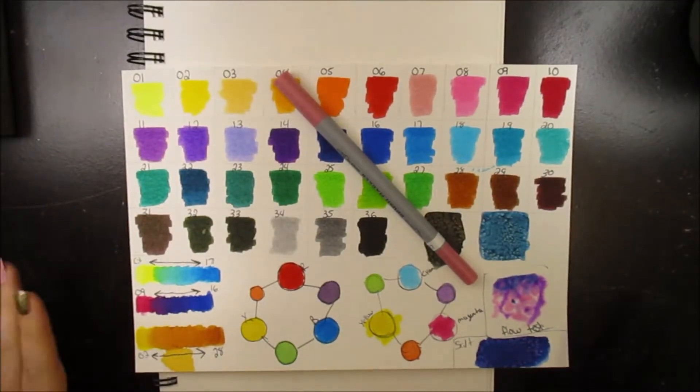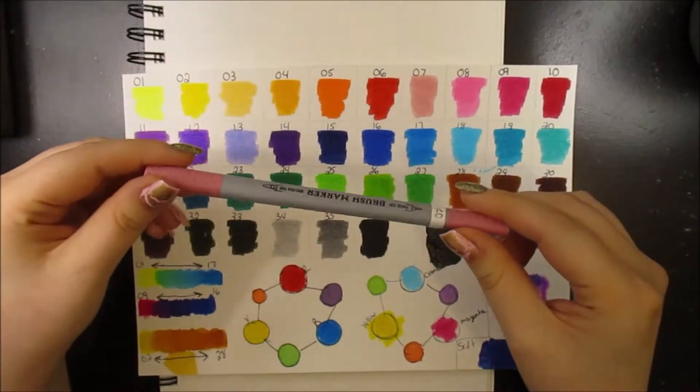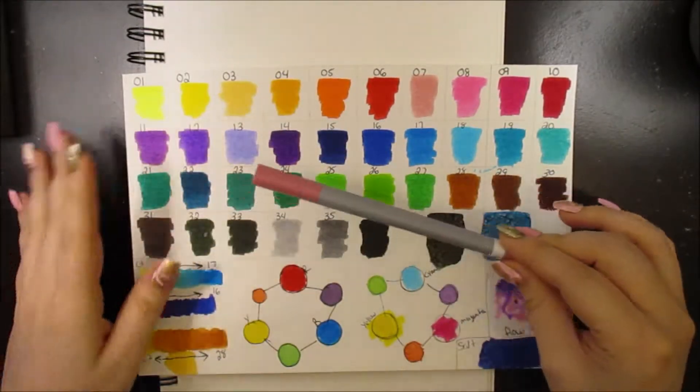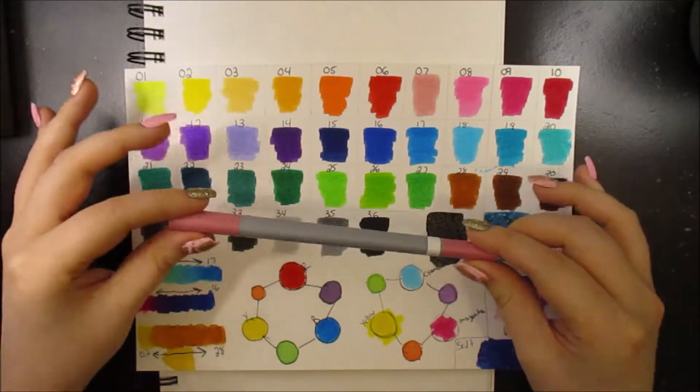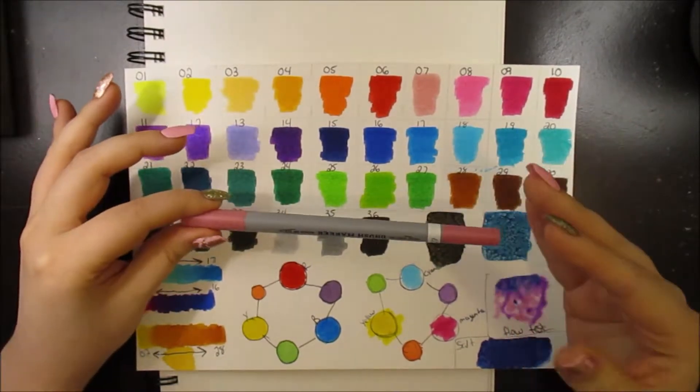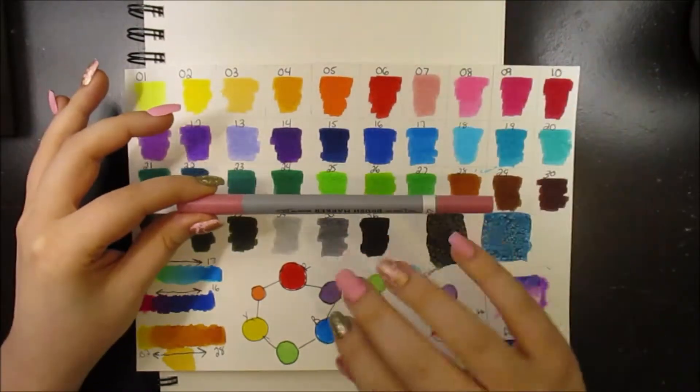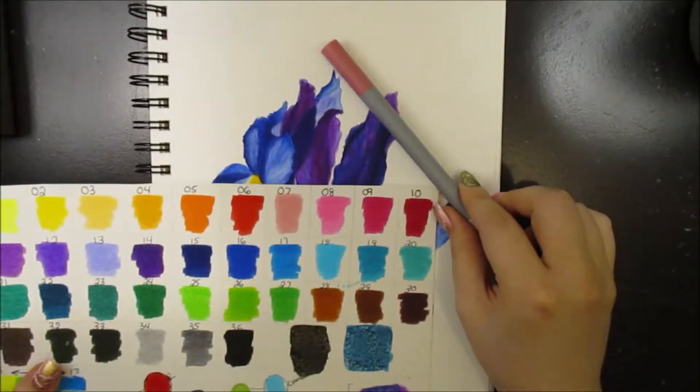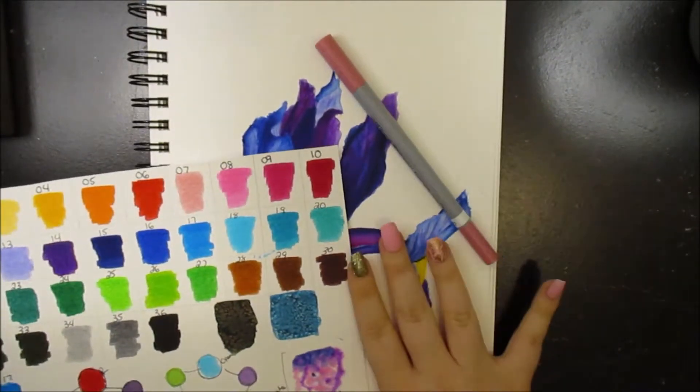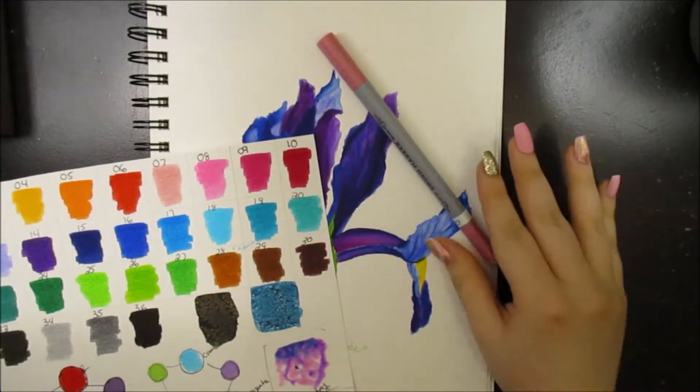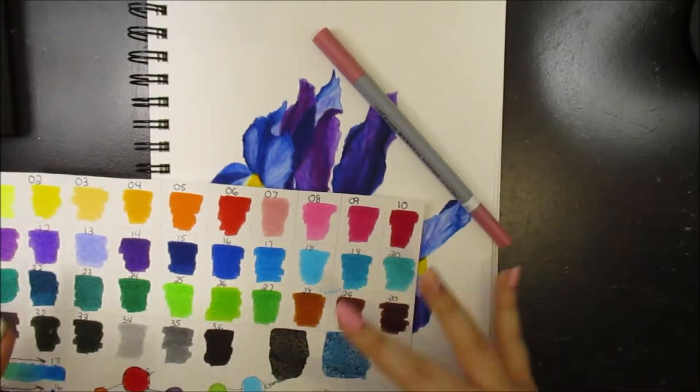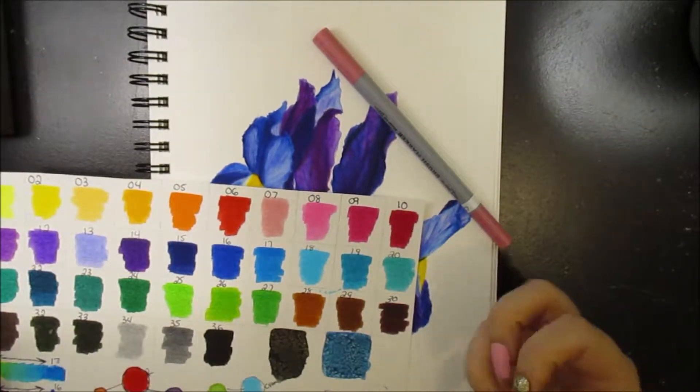Another thing that I wanted to let you know about these markers is that they are actually in a sort of a triangle shape, the barrel. So what that means is that instead of it being a round marker, it's not as likely to roll away because it's got those edges. So it's not going to roll away from your work surface. I appreciate that about these. Even for an inexpensive marker, they did pay attention to detail. And those little things do matter to me.